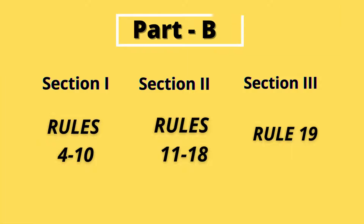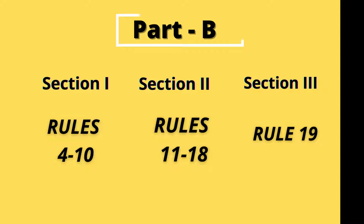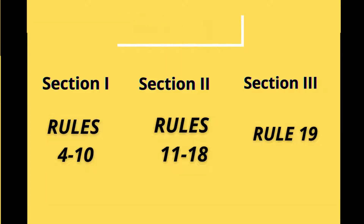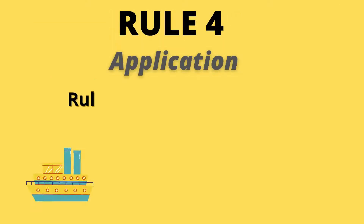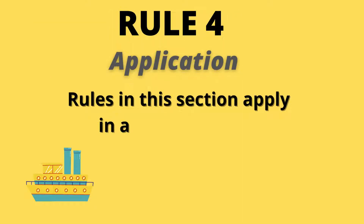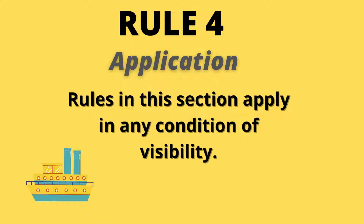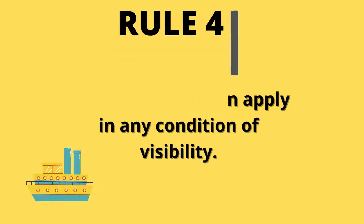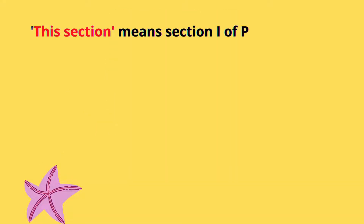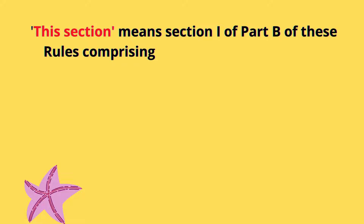Part B is further subdivided into three separate sections: Section 1, 2, and 3, covering Rules 4 to 10, 11 to 18, and Rule 19 respectively. Rule 4: Application — rules in this section apply in any condition of visibility. This section means Section 1 of Part B, comprising Rules 4 to 10.